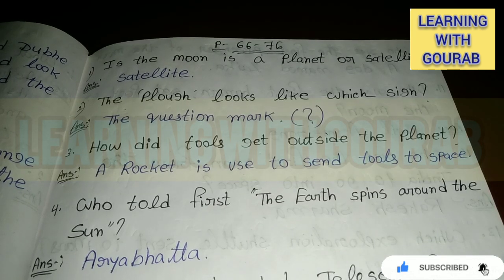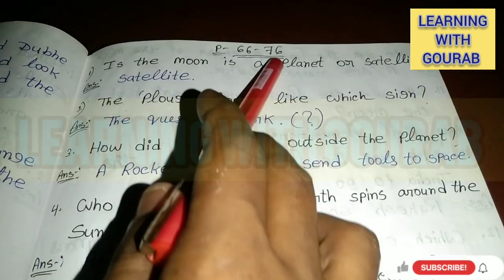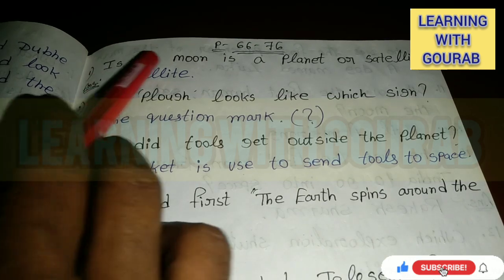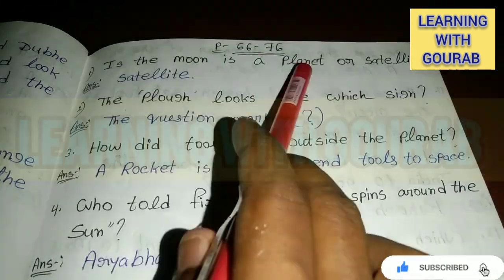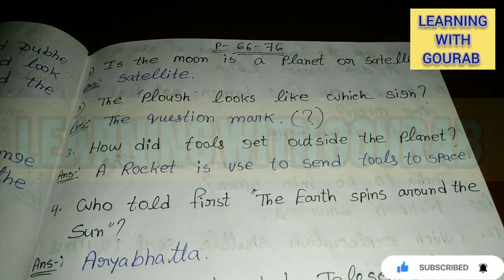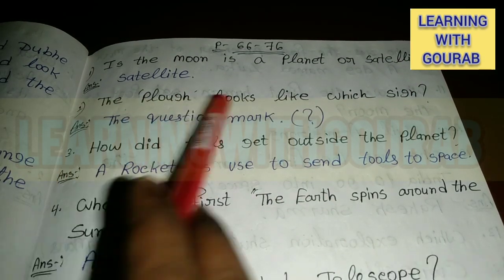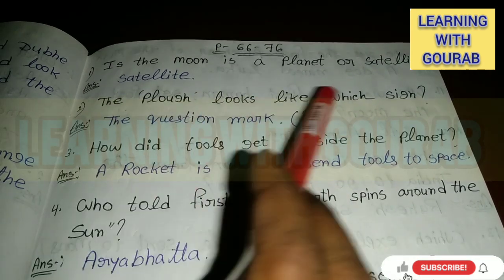Class 4 English medium, Our Environment, page number 66 to 76. First question: Is the moon a planet or a satellite? Answer: Satellite. Next: What does a plug look like? Which sign does it resemble? Answer: The question mark.